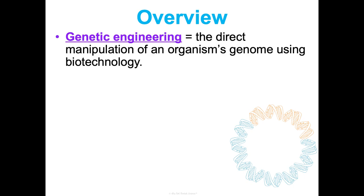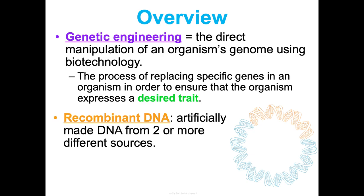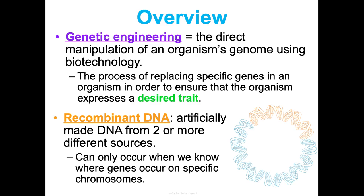Genetic engineering is specifically the direct manipulation of an organism's genome using biotechnology — they're related and go hand in hand. We're going to replace specific genes in an organism to ensure that organism expresses a desired trait, whether that's fixing something wrong or replacing something missing. And we couldn't do this without recombinant DNA, which is artificially made DNA from two or more different sources. We can use it to place specific genes in an organism because we know where genes are located on specific chromosomes.